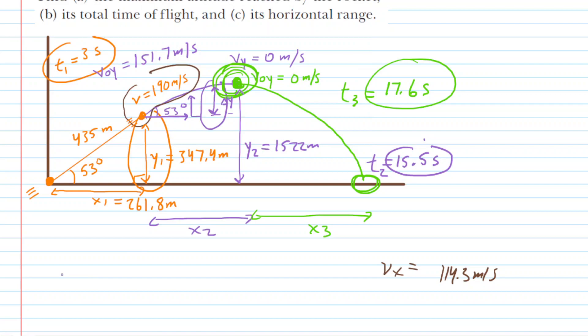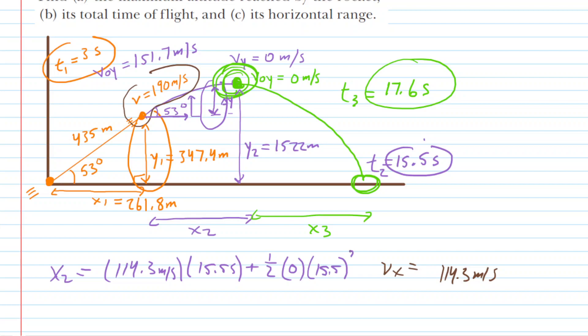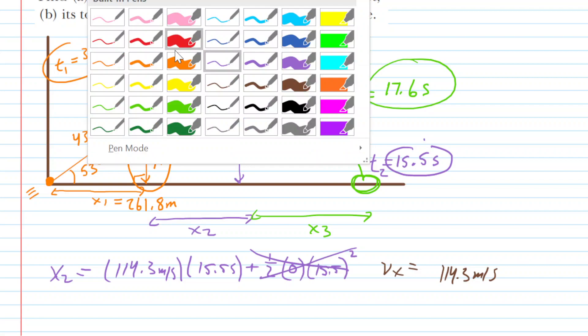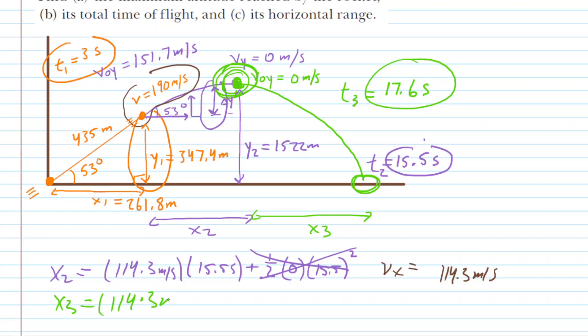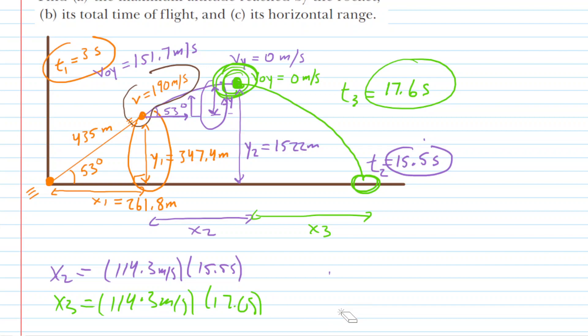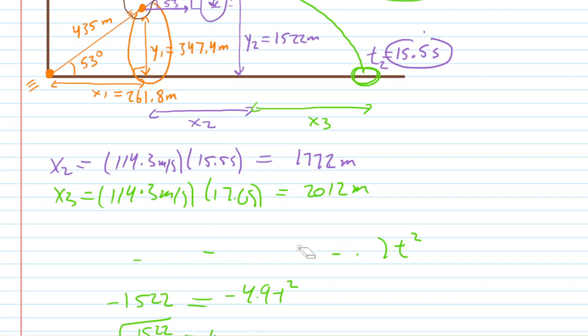Now it's straightforward to find those values. For x2, we take the initial velocity of 114.3 meters per second times the time of 15.5 seconds, plus one half times acceleration — which is zero in the x direction — so that term drops out. Similarly for x3, we take 114.3 meters per second times the flight time t3, plus zero. Computing these: x2 is approximately 1,772 meters, and x3 is approximately 2,012 meters.